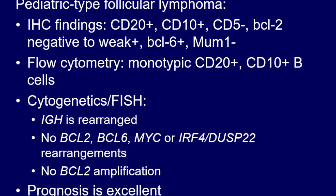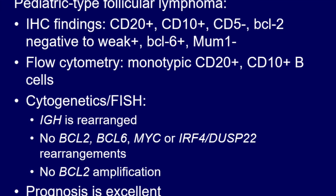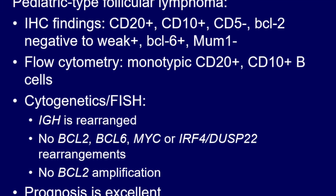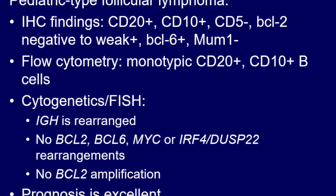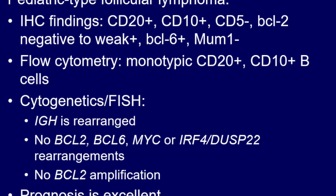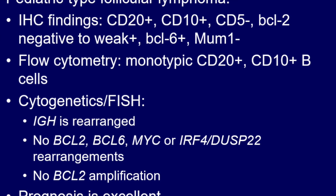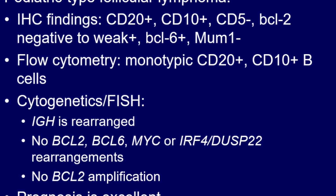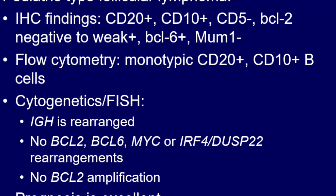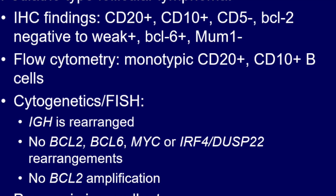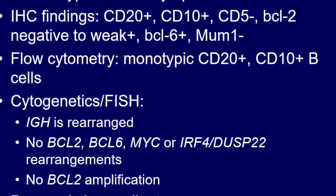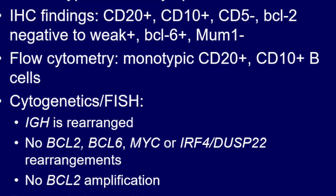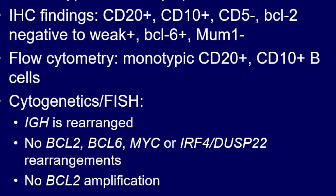Further studies that should be done on all pediatric cases include immunoglobulin heavy chain gene rearrangement, which is clonal in these cases. FISH should be performed and should be negative for BCL2, BCL6, and MYC rearrangements. IRF4 should not be rearranged, and there should be no BCL2 amplification. This type of lymphoma is a very low-grade lymphoma, and in many instances patients undergo watchful waiting to see if it resolves after surgery.